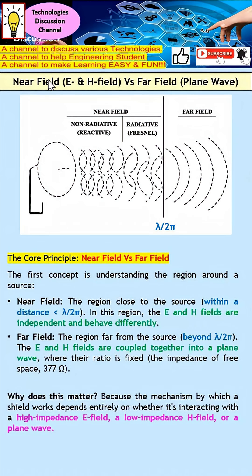Under near field, it is mainly dominated by either the E field or the H field. As for far field, typically it will be only plane wave.